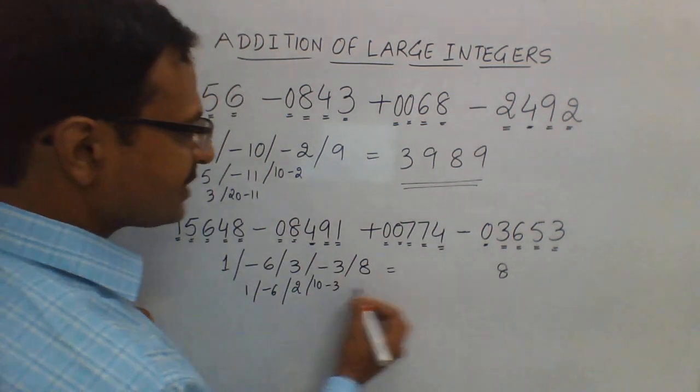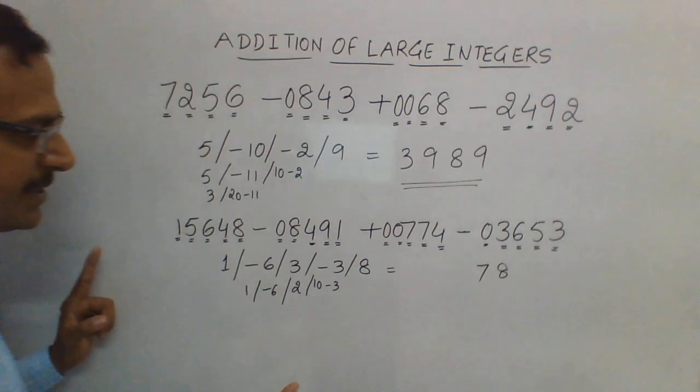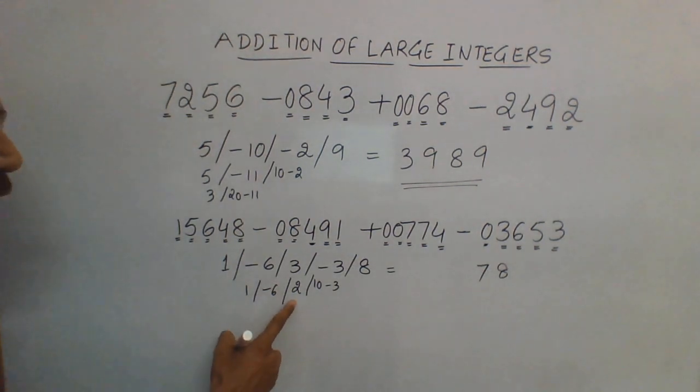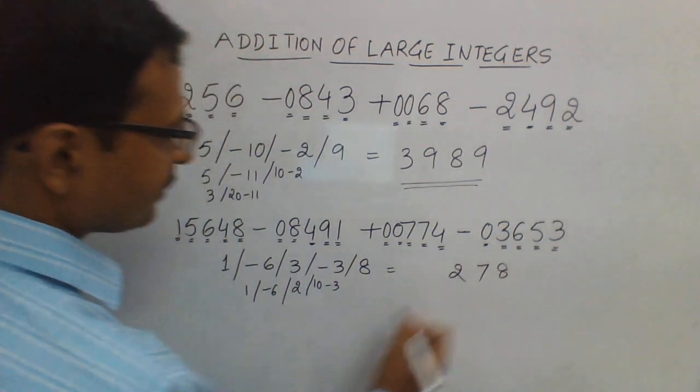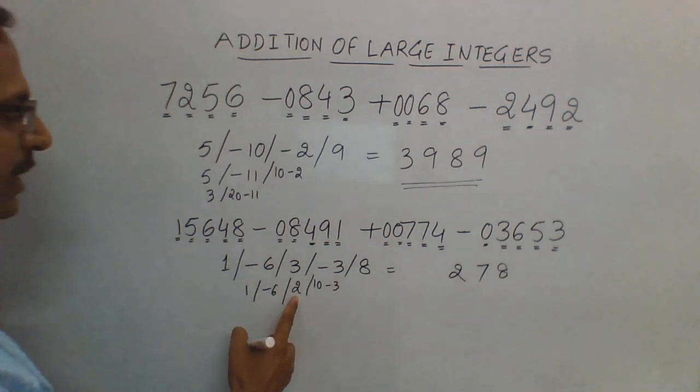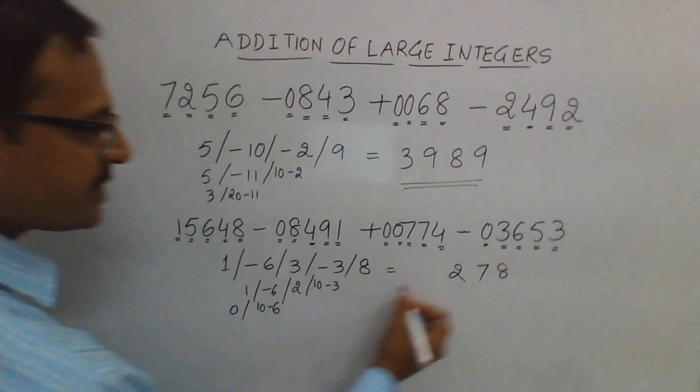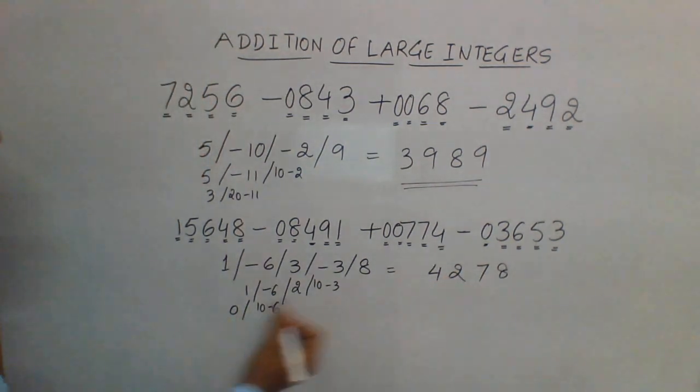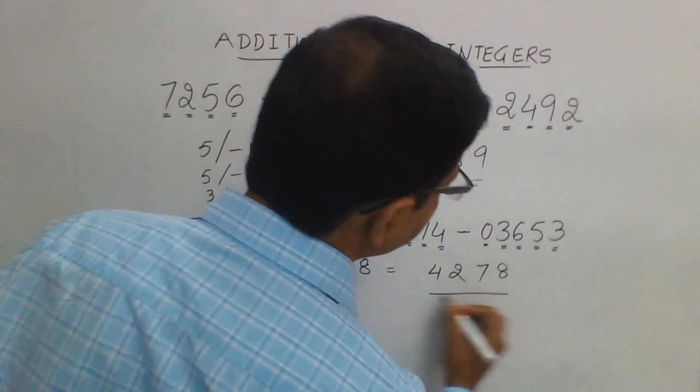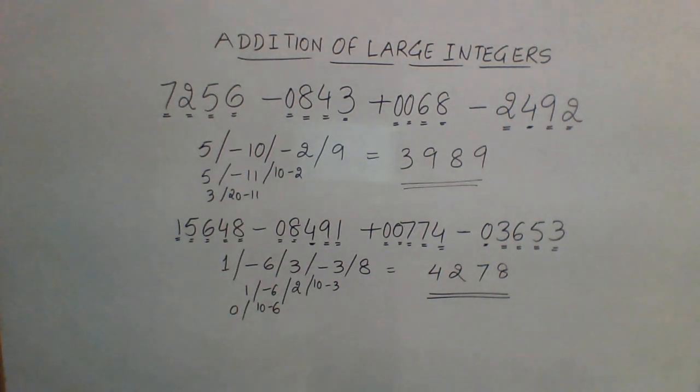So 10 minus 3 is 7—that's the next digit. And now 2 is again positive, so just write 2 as it is in the answer. And again, if you carry 1 from here, this will become 10 minus 6 and this will become 0. So 10 minus 6 is 4, and we don't need to write a 0 before that. So 42728 is the answer.